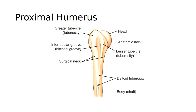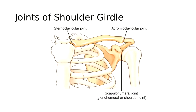All of this helps make up the shoulder joint. The head of the humerus sits in the glenoid cavity or glenoid fossa of the scapula. The joints of the shoulder girdle include the scapulohumeral joint (also called the glenohumeral joint or shoulder joint), and then the acromioclavicular joint or AC joint. Everything seems to have three names.